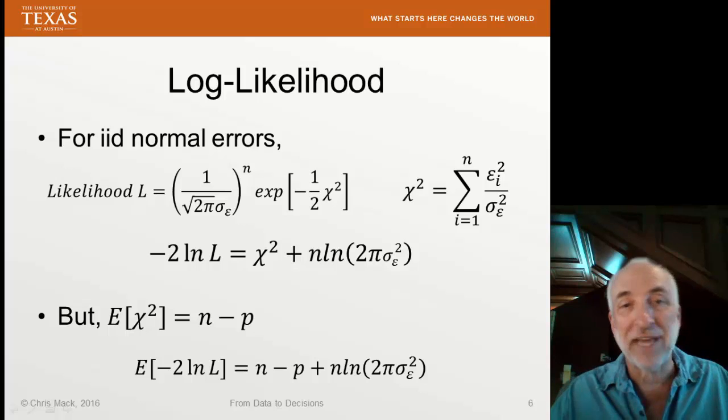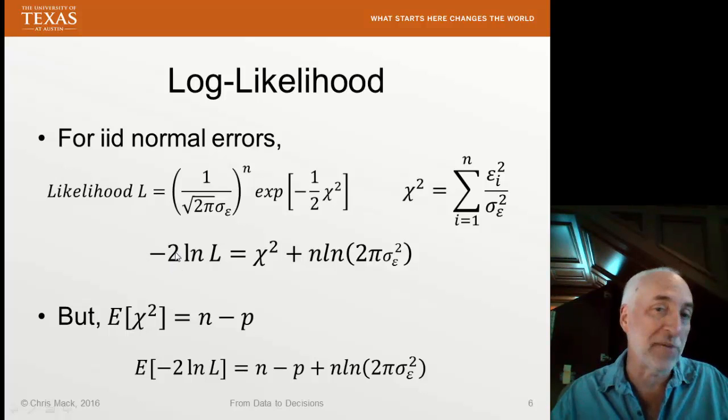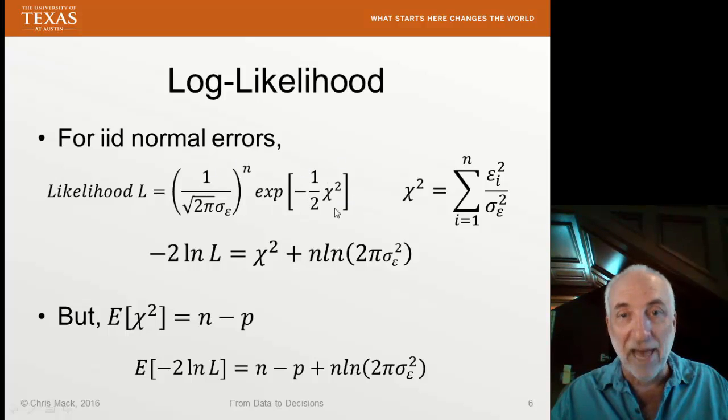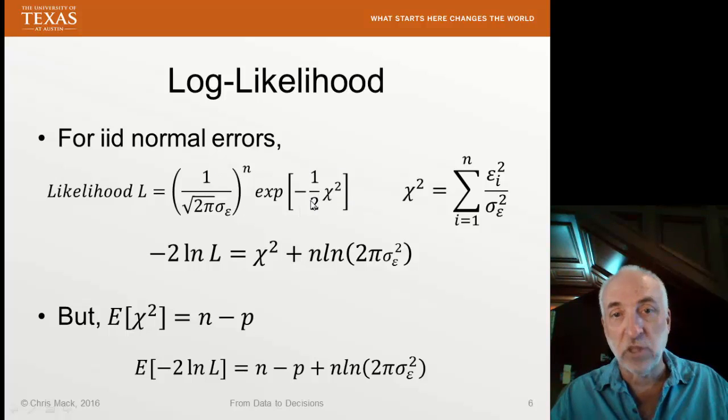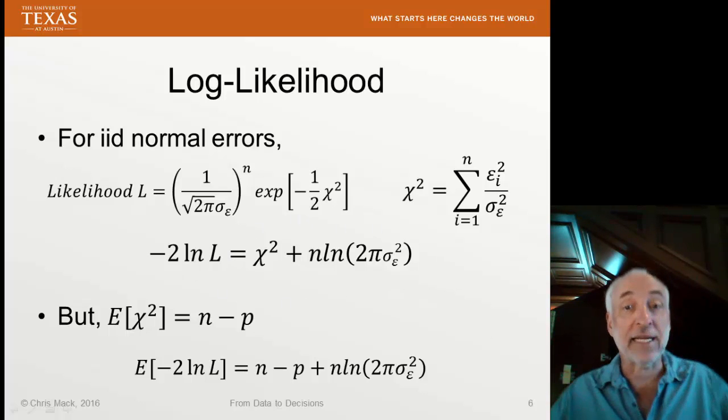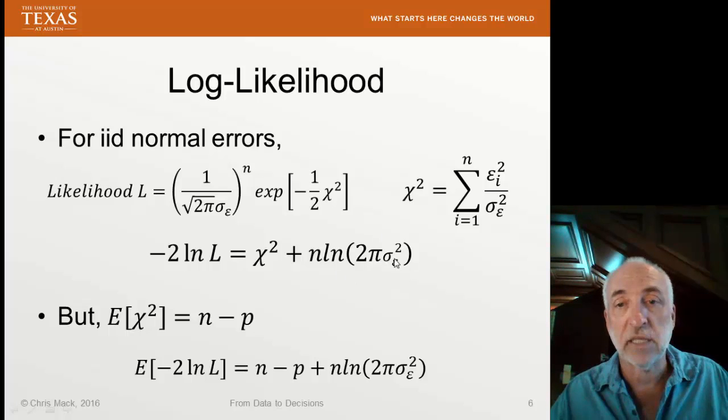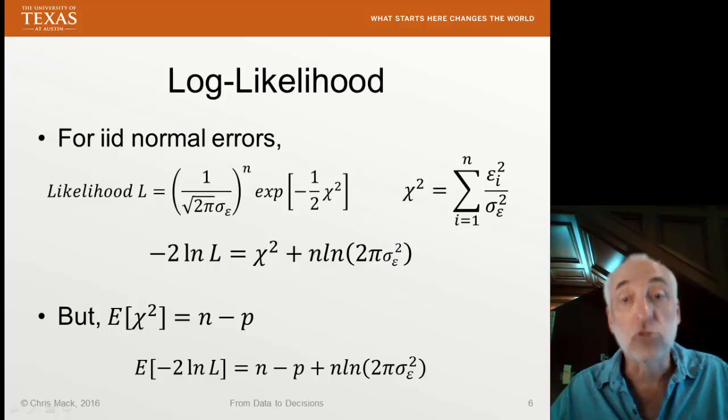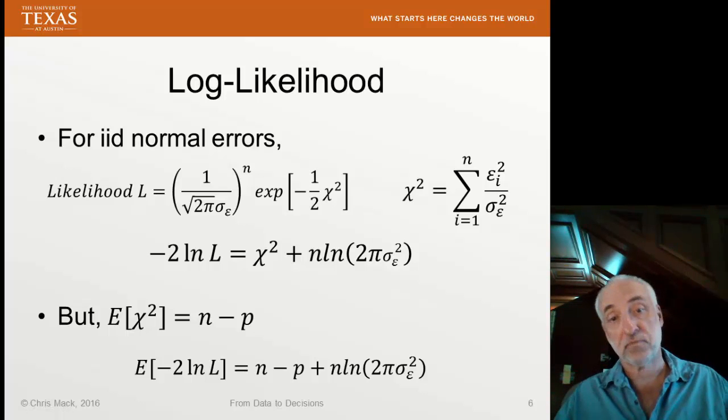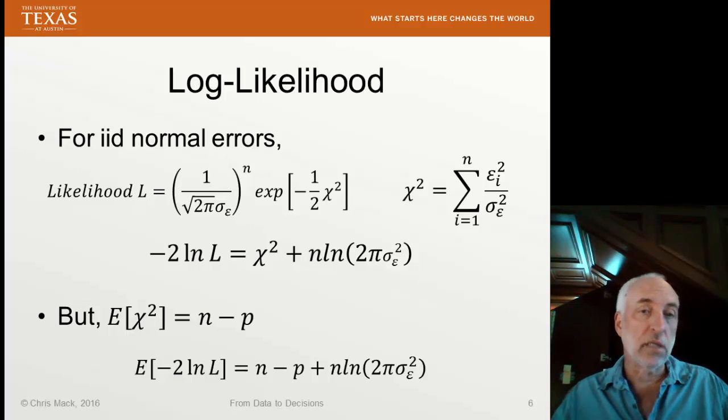Now if I take minus 2 times the log of that likelihood, my expression simplifies like this. Now you can probably see where the minus 2 came from, right? If I take the log of the likelihood and it's this Gaussian function, I'm going to get this minus 1 half out in front. So if I multiply by minus 2, it kind of cancels that out. So minus 2 times the log of the likelihood just simplifies the math a little bit. And I get chi-square plus n times the log of 2 pi sigma e squared. Sigma e squared is the variance, the true variance of my residuals. Okay, so that's what minus 2 log likelihood is.